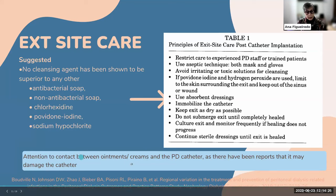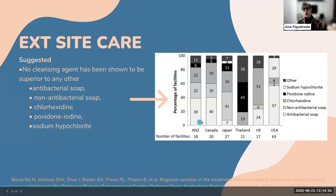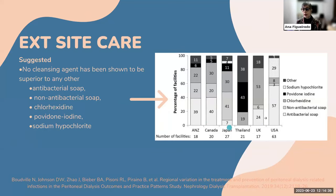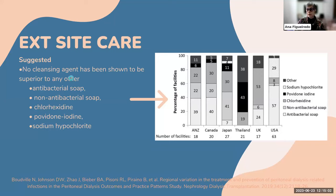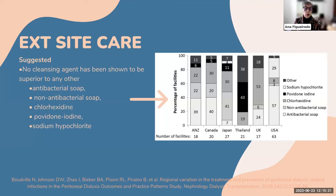Regarding cleaning agents — is there any one that is better than others? No. PDOPs has shown a wide variation of what cleaning agents are used across different countries. The most common is antibacterial soap or even regular soap during the shower. Some places use chlorhexidine or povidone-iodine. The guidelines suggest no cleaning agent is superior to others. We need more studies — perhaps regular antibacterial soap is sufficient and the safest option for most patients.